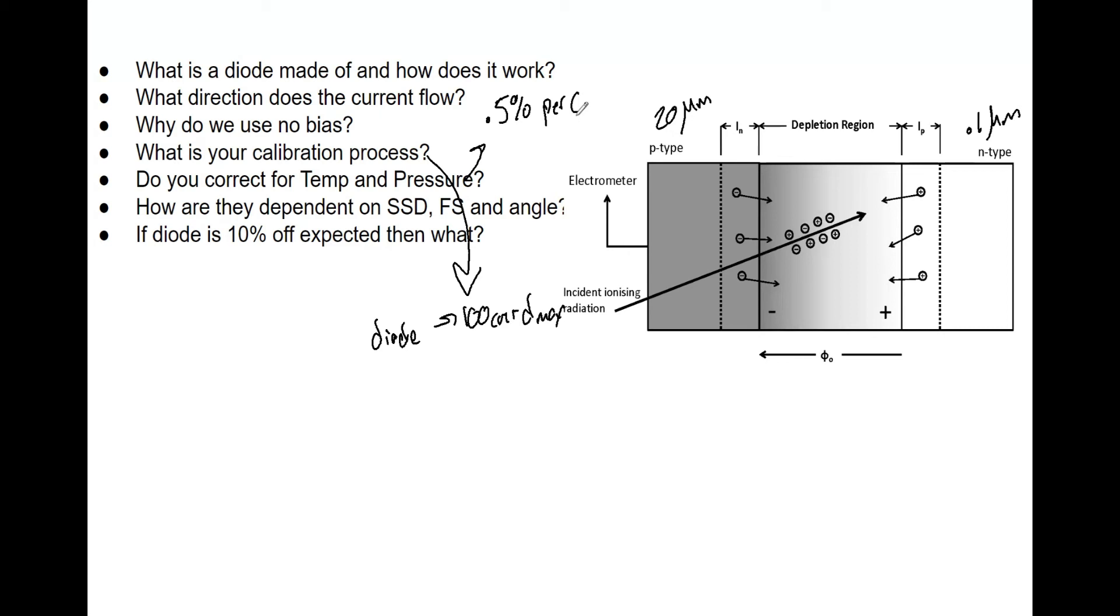Now how are diodes dependent on SSD and field size? For SSD, there is a weak dependence, I'm going to say two percent, so nothing drastic but it does play a factor. The diode underestimates the dose when SSD is increased. For field size, I'd say it is dependent up to five percent for large fields and that underestimates the dose. So that is very important for field size that you get that correct. The scatter makes a really big deal when you are using diodes.